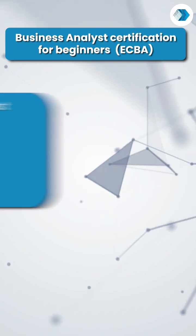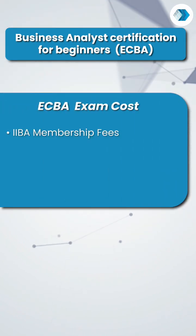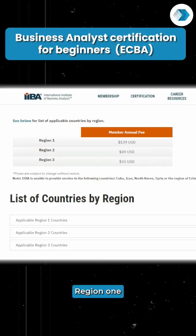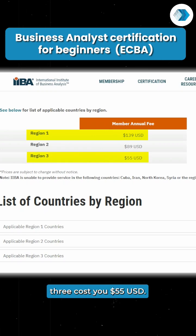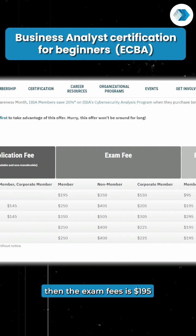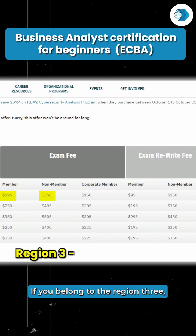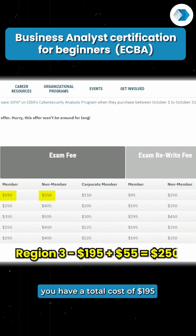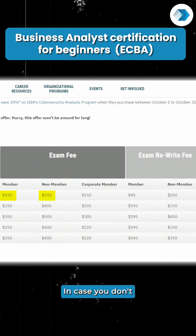The cost: one is the IIBA membership fees, which varies from country to country. Region 1 membership costs 139 USD whereas Region 3 costs 55 USD. The exam fees for members is 195 dollars, but if you are a non-member it goes up to 350 dollars. If you belong to Region 3, you have a total cost of 195 plus 55 dollars, which is 250 dollars. So if you become a member, you're going to save 100 dollars.